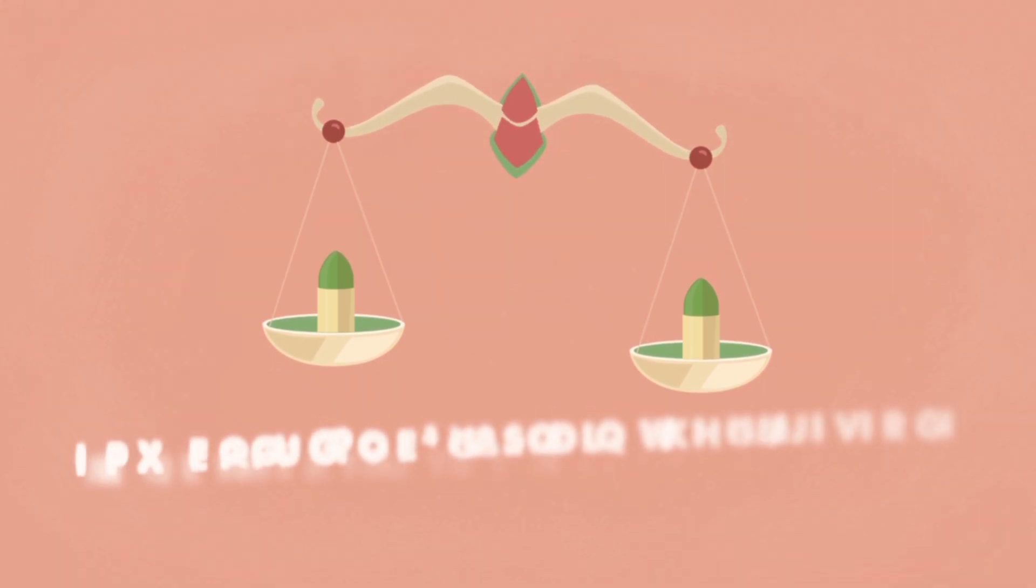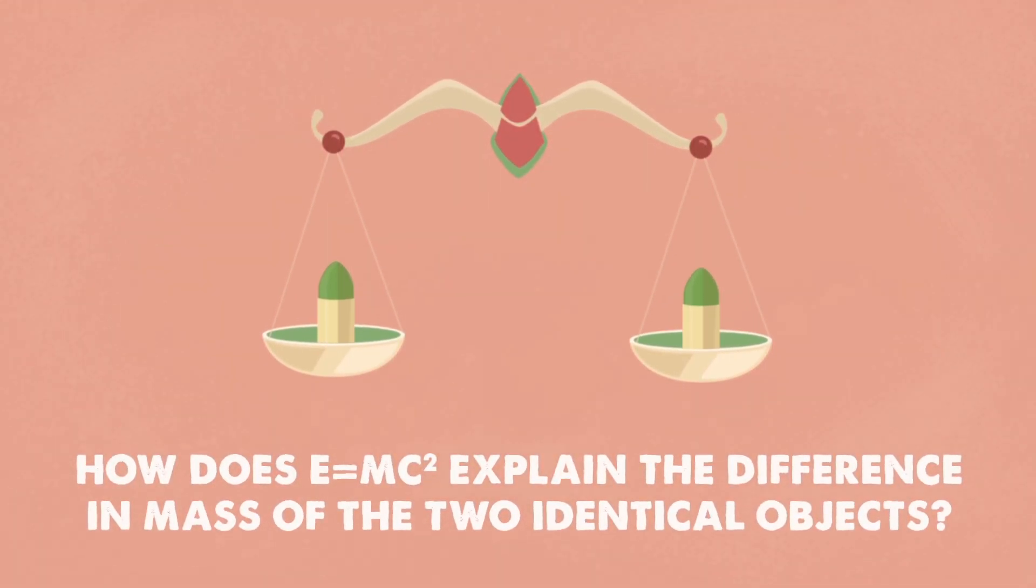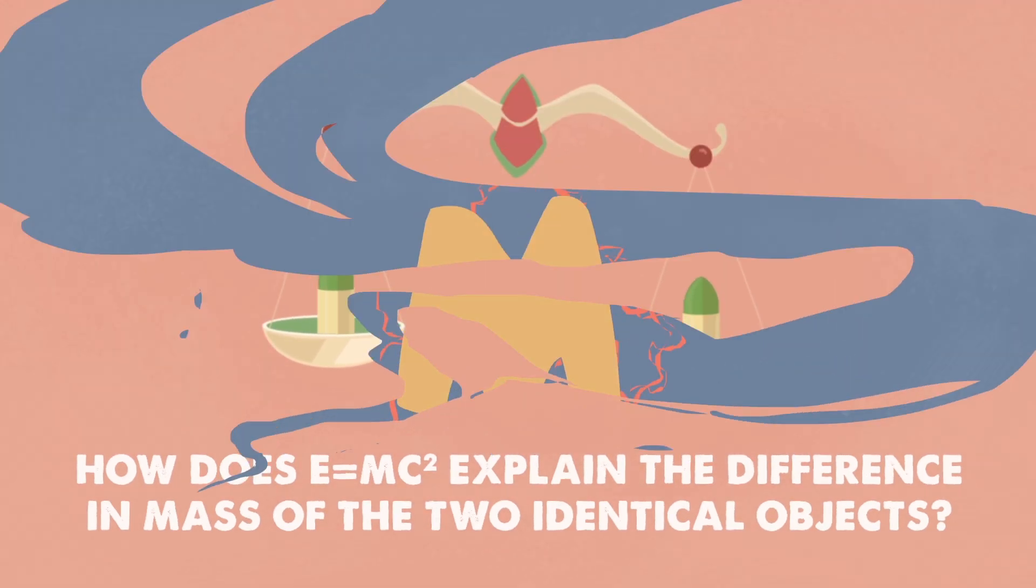So how does E equals mc squared explain the difference in mass of seemingly identical bullets? See, the equation tells us mass and energy are synonyms.